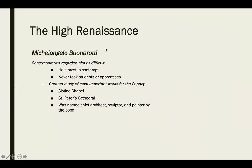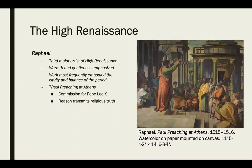Contemporaries regarded Michelangelo as difficult to work with — he held most in contempt and never took on students or apprentices, which was unheard of for someone of his stature. He created some of the most important works for the papacy, including the Sistine Chapel and St. Peter's Cathedral, and was named chief architect, sculptor, and painter by the Pope — an honor I'm not aware of being awarded to anyone else.